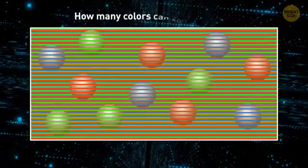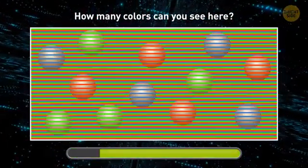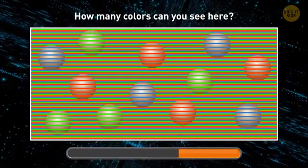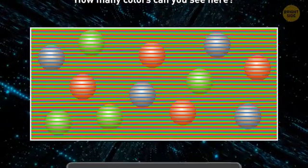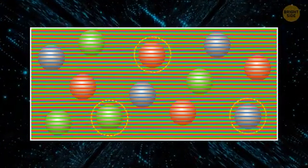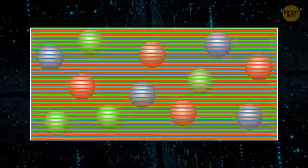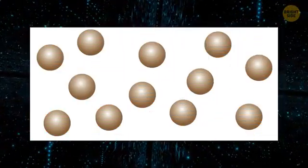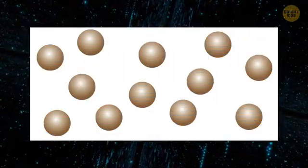How many colors can you see here? Did you get red, purple, and green? In that case, you're all wrong. If you zoom in on this illustration, you can see all the spheres are of the same color. The stripes in the foreground make you believe the spheres are of different colors too. If you remove that foreground from the image, you'll see all the spheres are beige.